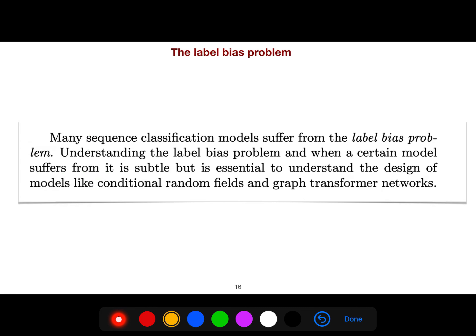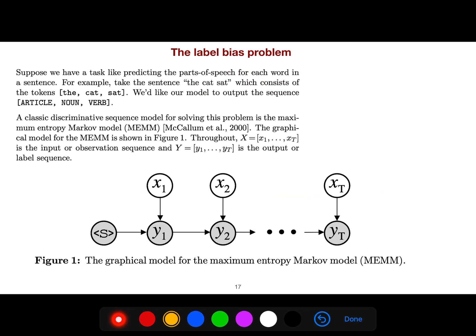Many sequence classification models suffer from the label bias problem. Understanding label bias and when a certain model suffers from it is a subtle problem, but it is essential to understand the design of models like conditional random field and graph transformer networks.